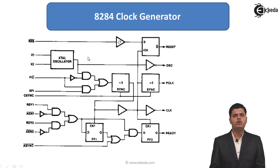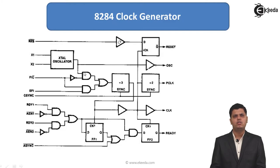This is how the 8284 clock generator looks. It has different inputs, different digital logic components including an oscillator, AND gates, and OR gates, through which logical operations are performed. The reset, oscillator frequency, pre-clock, and clock signals are provided to the external microprocessors.